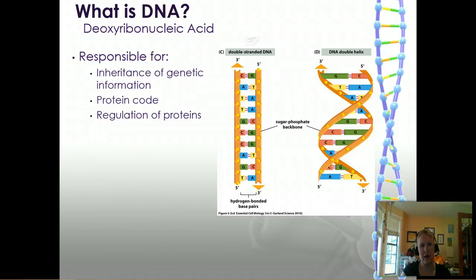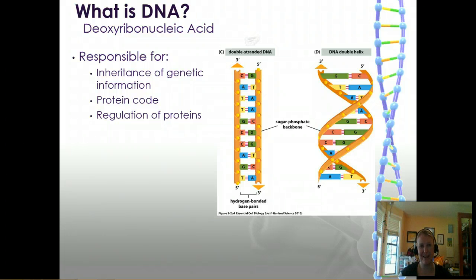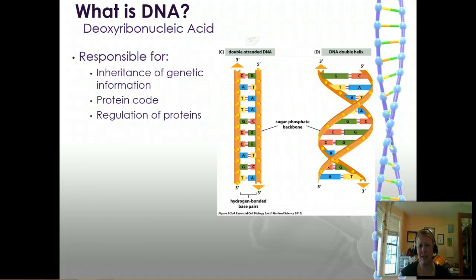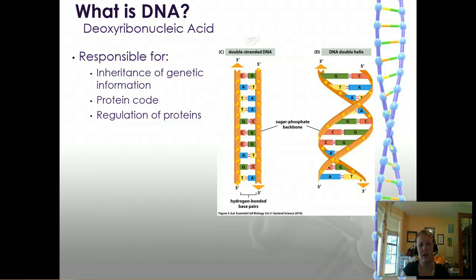Every cell in our bodies has your entire genome in it. That's why we can take a cheek sample and be able to sequence your entire genome from it. It's all about how genes are activated, and we'll get to that later in this unit. This DNA code codes for the proteins that are going to be made, mostly for proteins — and we talked about this with sickle cell, how a modification within the base pairs can change the way proteins are built.